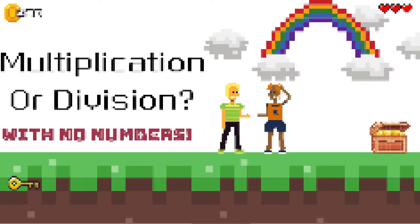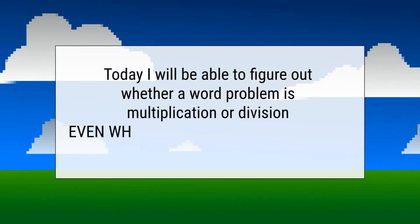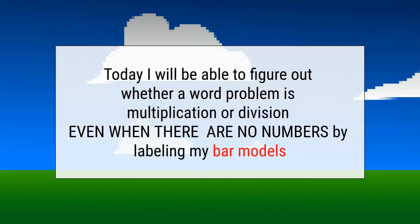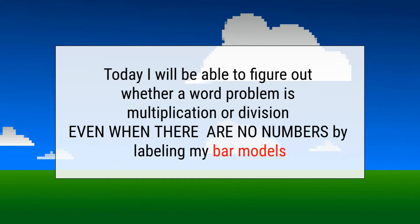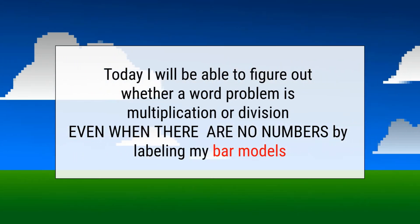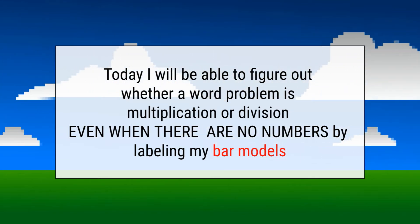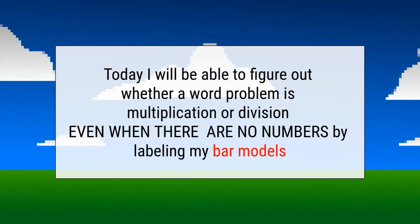Let's take a look at our objective today. Today I will be able to figure out whether a word problem is multiplication or division, even when there are no numbers, by labeling my bar models. We do not need numbers to help us figure out what to do. Obviously to solve them yes, but to figure out what to do, no.